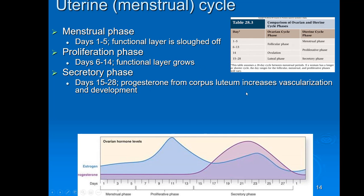If no fertilization takes place, the corpus luteum becomes the corpus albicans, progesterone drops, and the functional layer comes off, taking us back to the menstrual phase. If fertilization did take place, HCG would continue to maintain the uterine lining and you would not enter the menstrual phase. A graph shows estrogen rising as the functional layer grows, and then after ovulation the corpus luteum produces progesterone to maintain the uterine lining — correlating the menstrual cycle to the ovarian cycle.